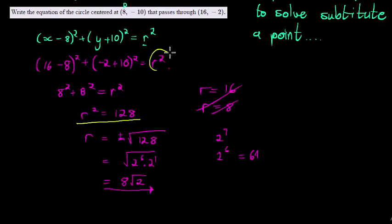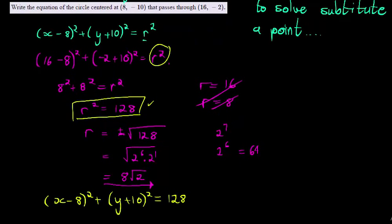To be honest, I could have finished this question at this point already, because they asked me to write down the equation, and in the equation I only need r squared. So as the moment I had r squared, I could have stopped and just substituted it in there. My final answer is x minus 8 squared plus y plus 10 squared is equal to 128.